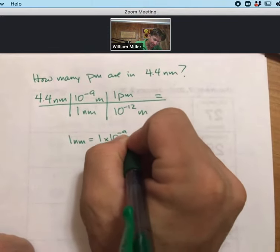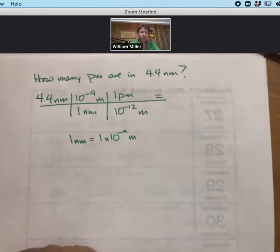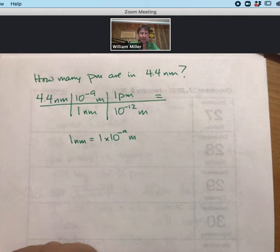And sometimes we write it as one nanometer equals 1 times 10 to the minus 9 meters. But the 1 is assumed, and that happens a lot in math and chemistry. So if there's no number, then the number is 1.